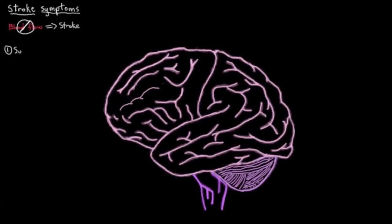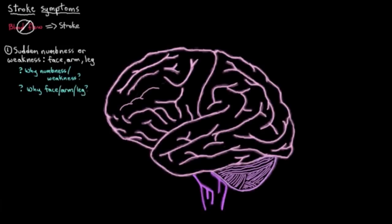So the first one we'll look at is sudden numbness or weakness, in the face, the arm, or the leg. So immediately a few questions pop into your mind. Why would you develop numbness or weakness? Why commonly the face, the arm, or the leg? And also, does this happen on both sides of the body, or is it just one side of the body? And these are all great questions.